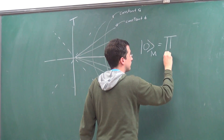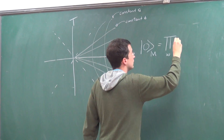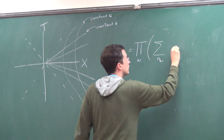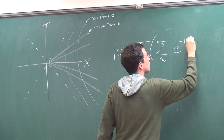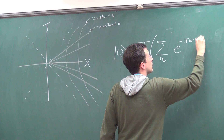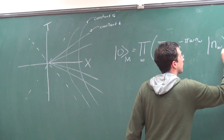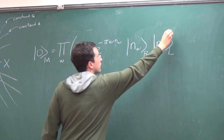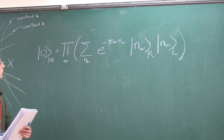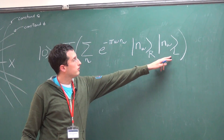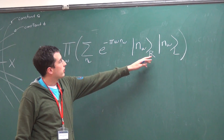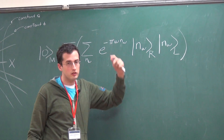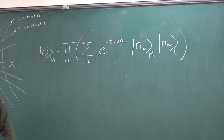To write that again: it's a product over omega, sum over n_omega, e to the minus — so it's an entangled state between the left wedge and the right wedge, where n_omega is the occupation number of the mode of Rindler frequency.